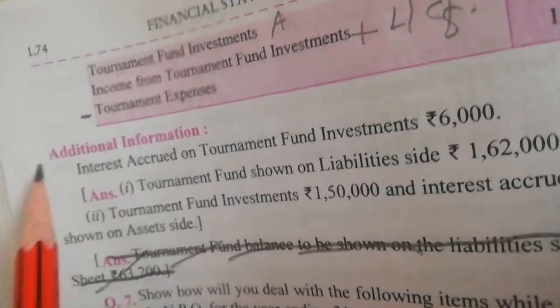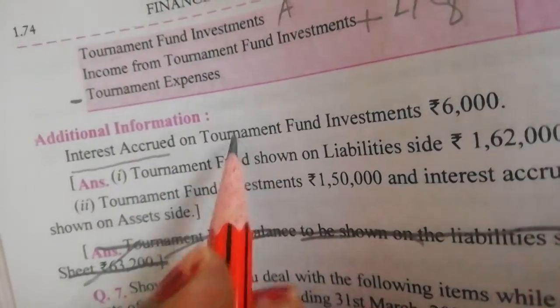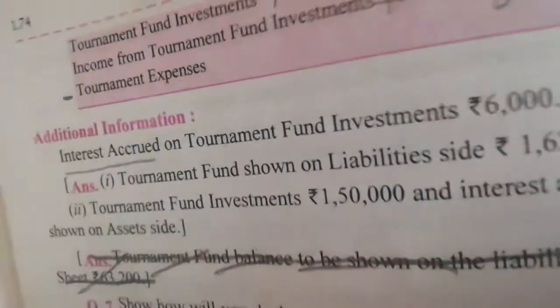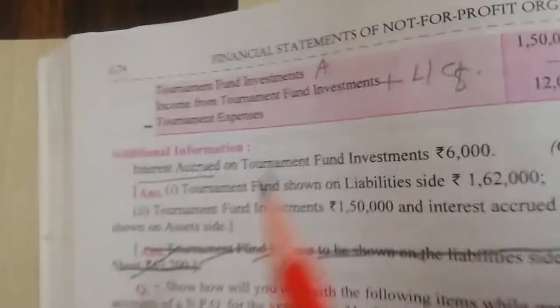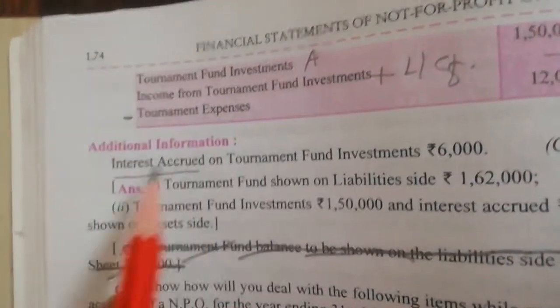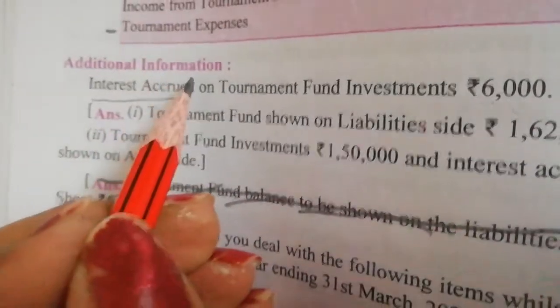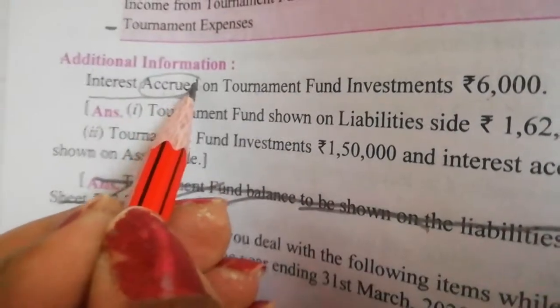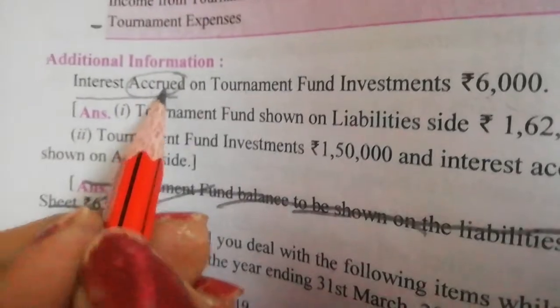Now, a new thing in this question is the adjustment. The adjustment says: interest accrued on tournament fund investment is 6,000. What is accrued interest — it is accrued income. If you look at 'accrued,' it is accrued on tournament fund investment, so what do you do?